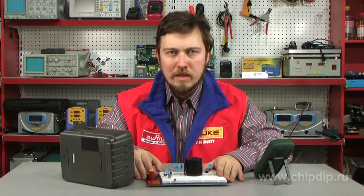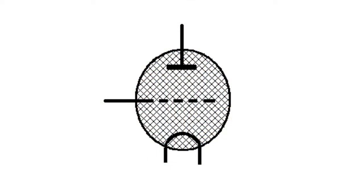There are two basic types of thyratrons: cold cathode and glow cathode ones. We'll dwell on cold cathode thyratrons.